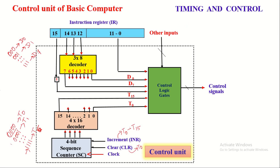Assume that an instruction read from memory is now displayed in the instruction register. We are going to discuss how this instruction, now available in the instruction register, is interpreted by the control unit and how it initiates control signals to make other parts of the computer perform micro-operations. Bits 12 to 14 of the instruction are given as input to the 3-by-8 decoder, which activates one output line out of its 8 output lines based on the 3-bit input received.